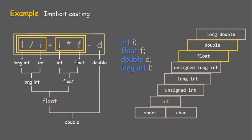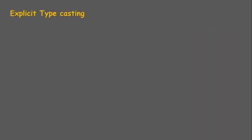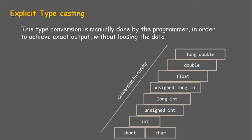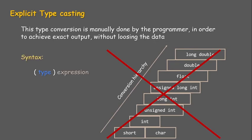This is how the compiler follows the conversion hierarchy to perform type conversion. Next, explicit typecasting: this type conversion is manually done by the programmer in order to achieve exact output without losing data. Rather than following the compiler's implicit conversion hierarchy, the programmer explicitly converts the final result of an expression to a particular data type. The syntax is: (type) expression.